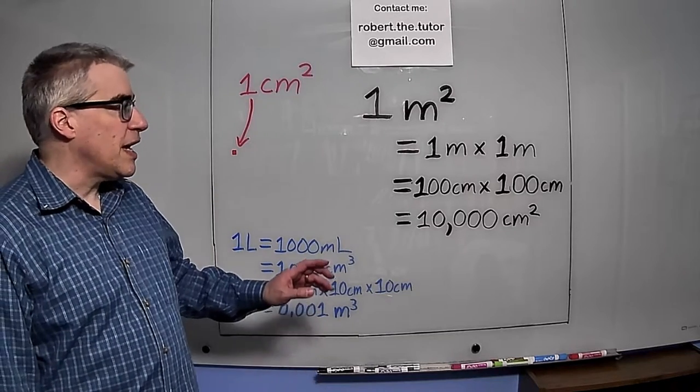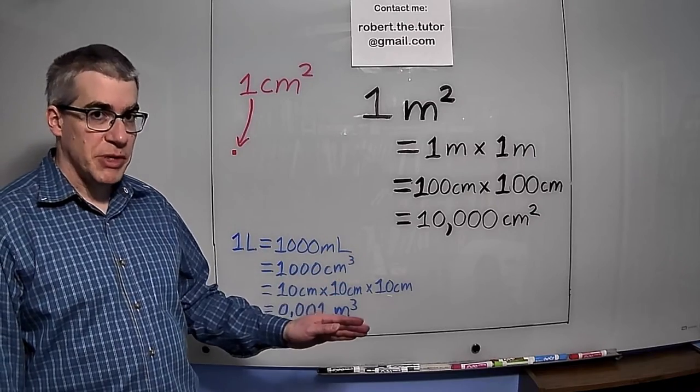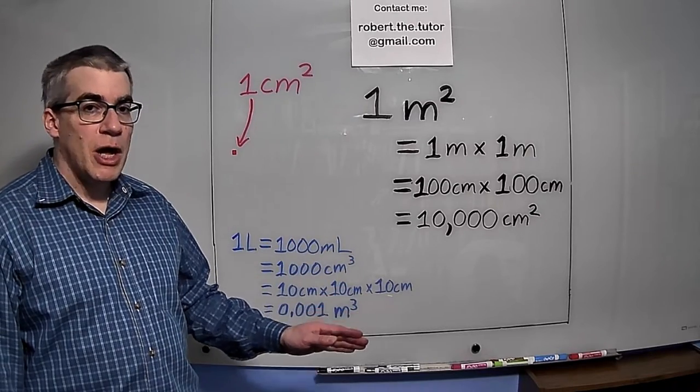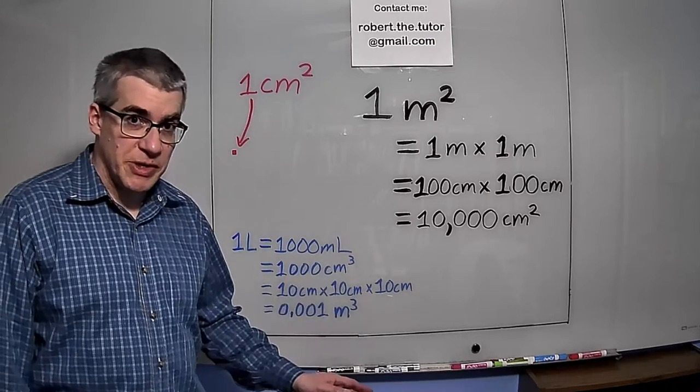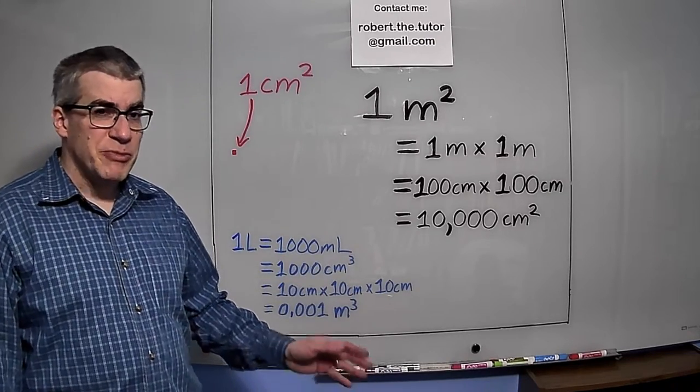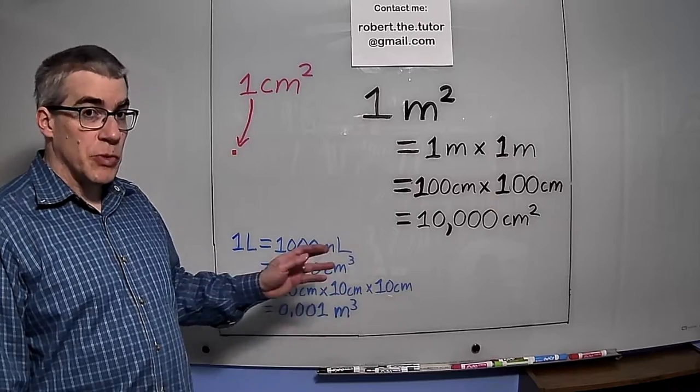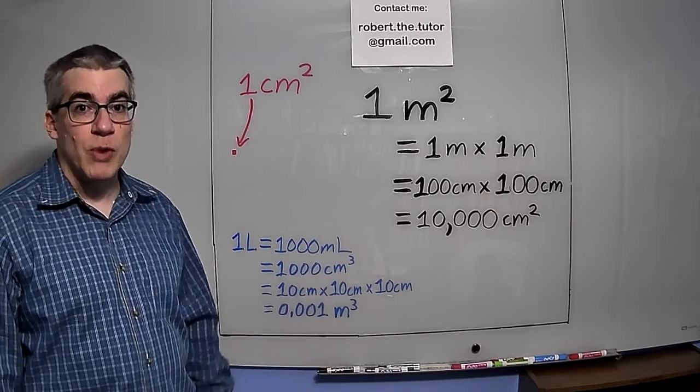Students generally know that a meter is a hundred centimeters, but a very common mistake is to think that a square meter is a hundred square centimeters. The only reason they're making that mistake is because they don't have a good visual picture of what that means.